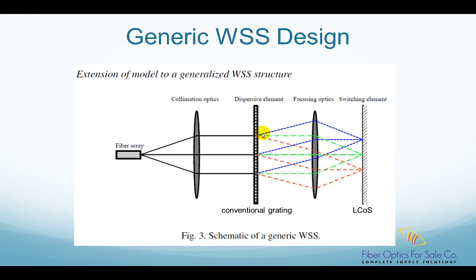With the conventional grating, the wavelengths are separated into different angles — blue to the top, green in the middle, and red to the bottom. These lights are still collimated. So next, they are focused by the focusing optics and projected onto the switching element. The purpose of the switching element is to direct different wavelengths to different output ports. In the liquid crystal on silicon-based WSS, this switching element is a liquid crystal on silicon chip.